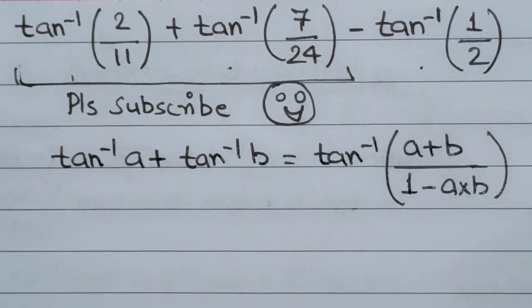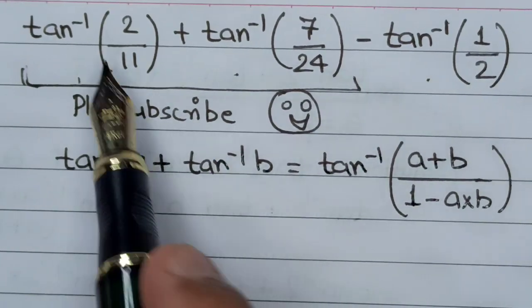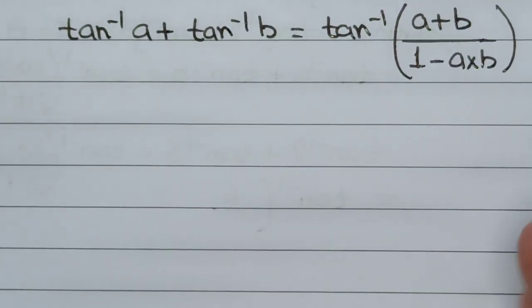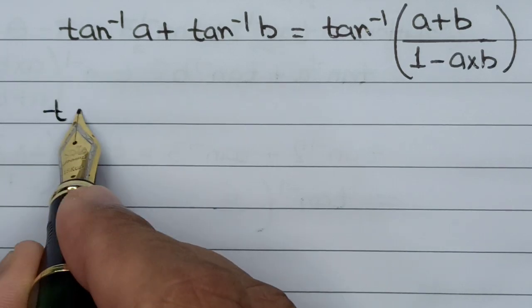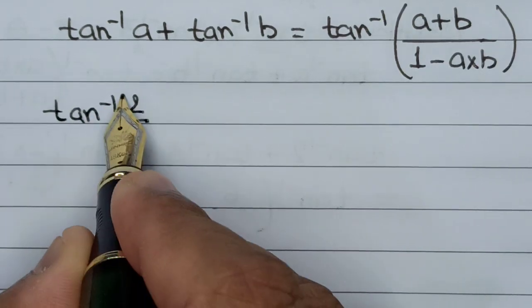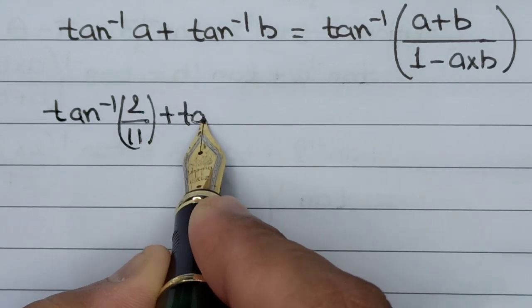We will apply this formula to the initial two parts of the question. This formula, when applied, gives us: tan⁻¹(2/11) + tan⁻¹(7/24) equals tan⁻¹...